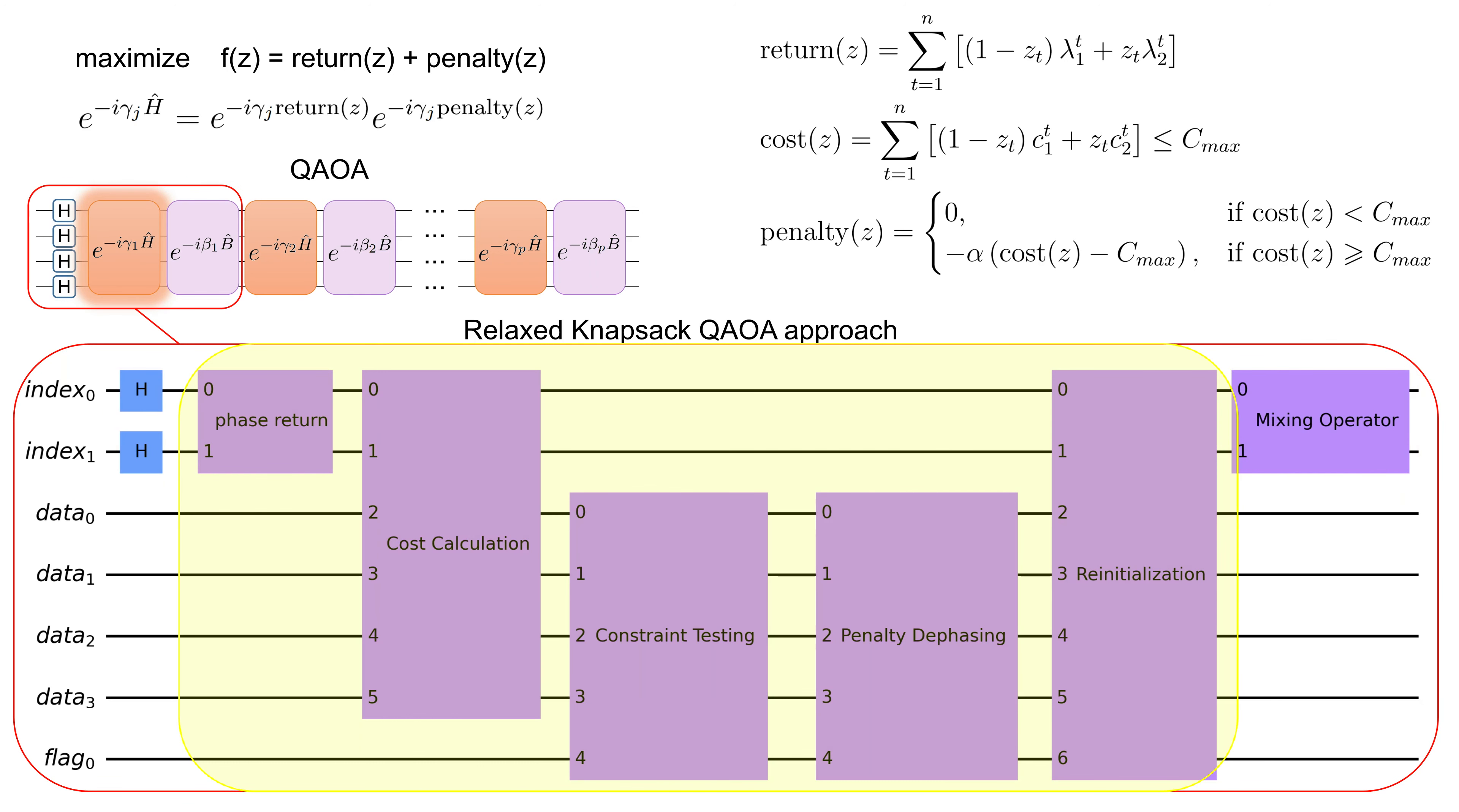The Hamiltonian will consist of two parts, but the quantum adiabatic theorem works for any Hamiltonian. The block, which is called phase return, encodes a total return, the first part of the Hamiltonian.